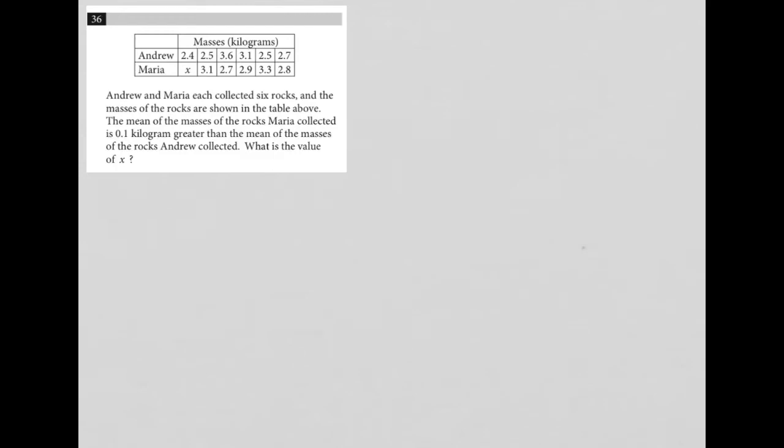So this question looks like a diagram question. I say that because of the table provided here. Let's take a look at the table. We have two rows, one's for Andrew, one's for Maria. And we have different masses in each column here, of course, with this mass unknown for Maria. So let's see what all this is about.